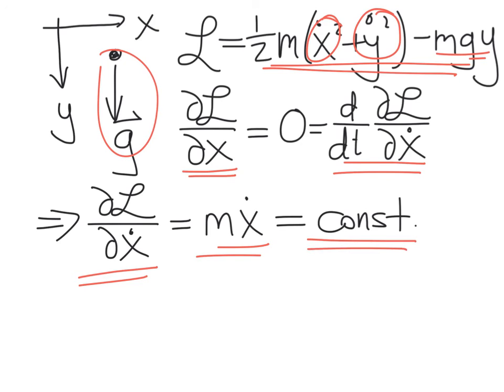Therefore, the x-partial derivative of the Lagrangian — which is m x dot — is just a constant. In other words, for a system where gravitational acceleration only pulls along the y direction, the x-momentum is constant. This is another good example where there's no dependence in the Lagrangian on a particular coordinate, and so the corresponding generalized momentum for that coordinate is conserved.